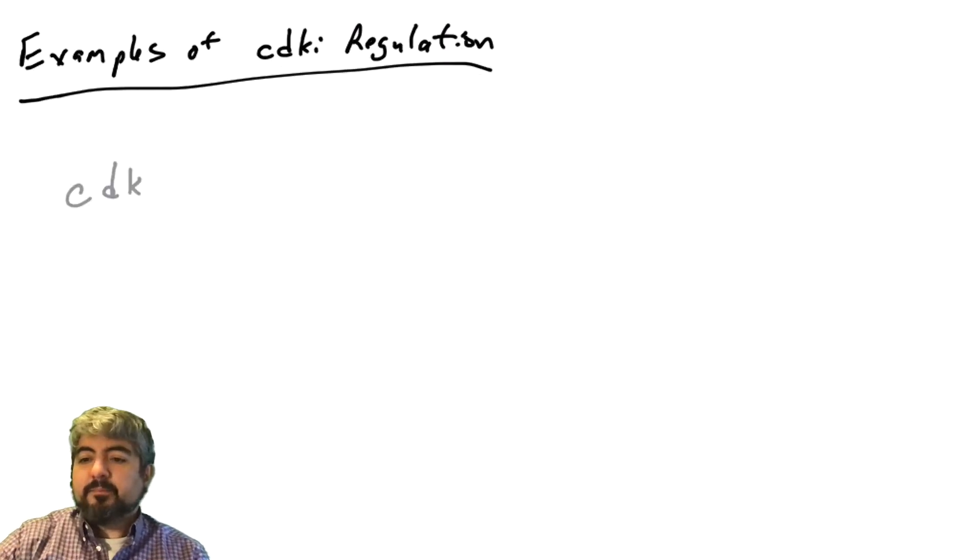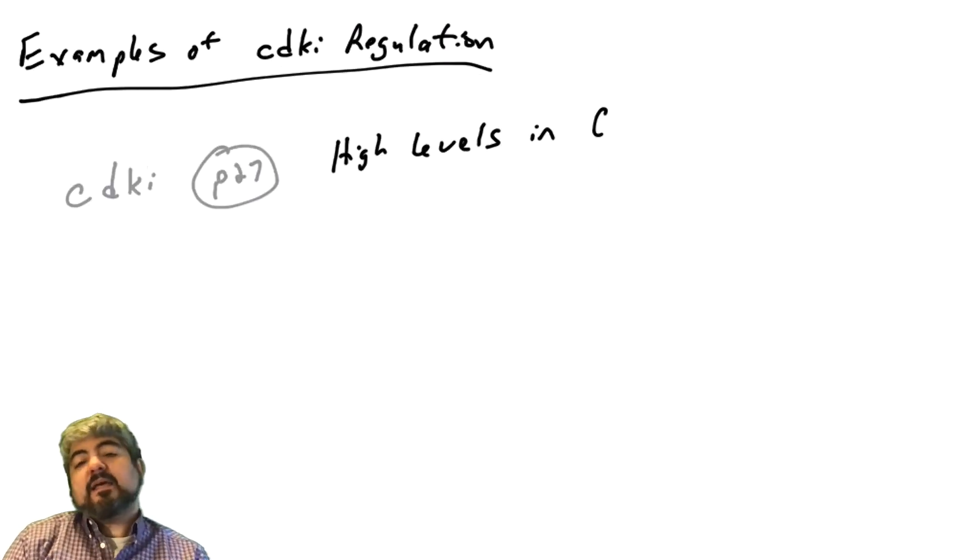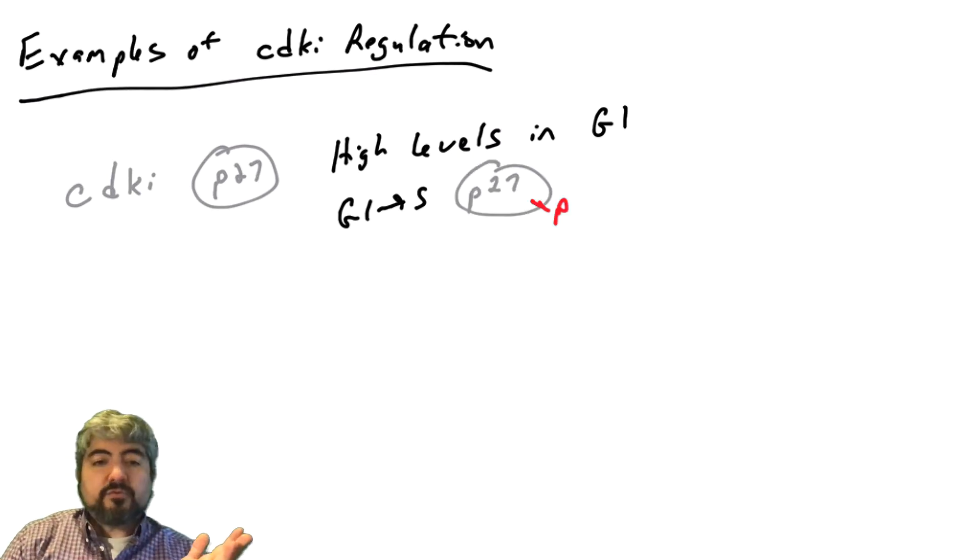The first example we'll talk about is the CDKi P27. P27 in many cells in the body is at very high levels in G1. It can be working to inhibit any of the CDKs, preventing movement from G1 into S phase. Well, now let's say the cell wants to go through into S phase. We need to somehow inhibit P27.